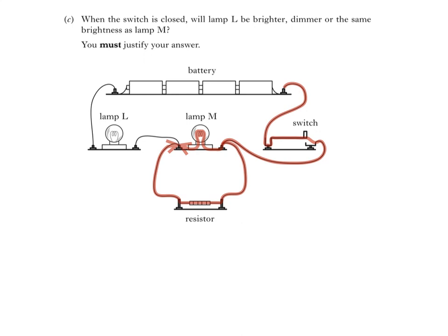That's because lamp M and the resistor are in parallel. These two currents then join together, so you can see that the current in lamp L is greater than the current in lamp M. Because of this, lamp L will be brighter than lamp M, and that's our answer.